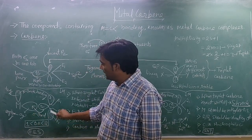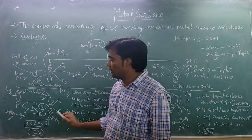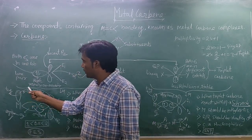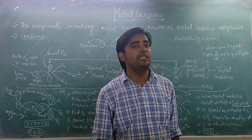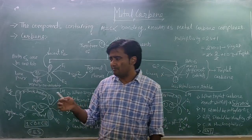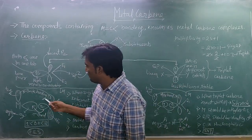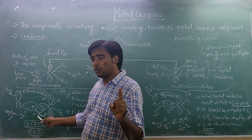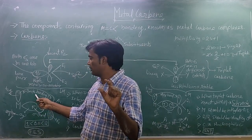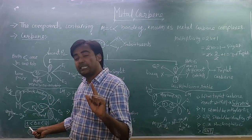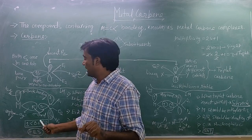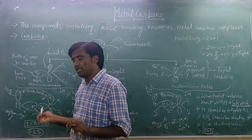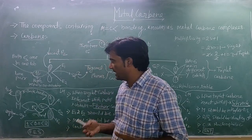Pi-backbonding never forms a complete bond — it is a partial bond. So the bond order between metal and carbon is greater than one but less than two. This carbene is known as Fischer carbene, named because it was discovered by Fischer.